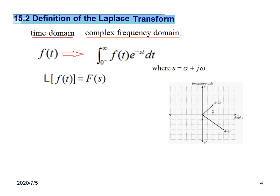When we want the Laplace transform of a function F(t), we write it with L. We also call it capital F(s), meaning this is the transform in Laplace form. So we can write that the Laplace of F(t), which is F(s), equals the integral of F(t) times e to the minus st dt. There are a couple of ways it is written.